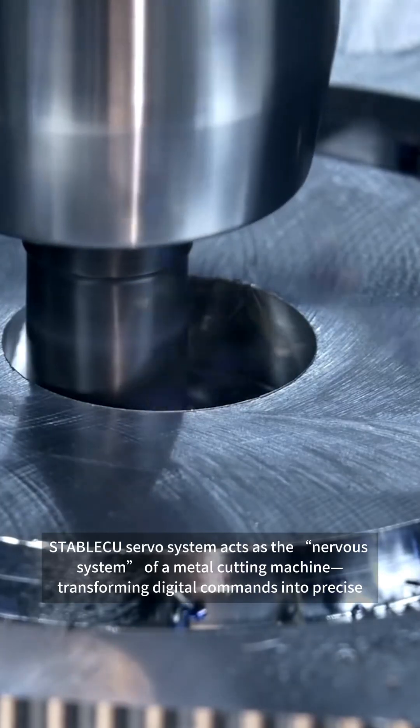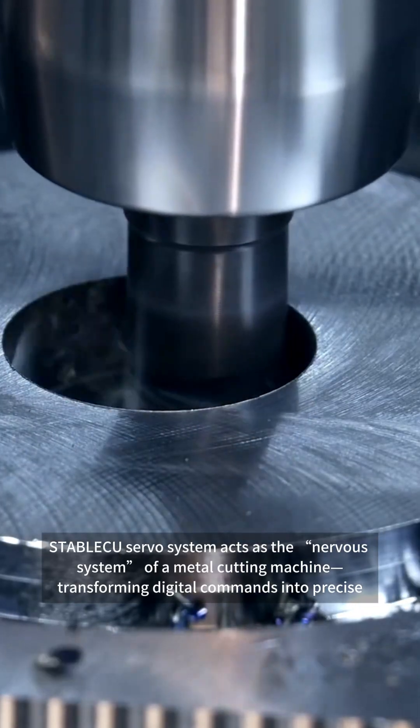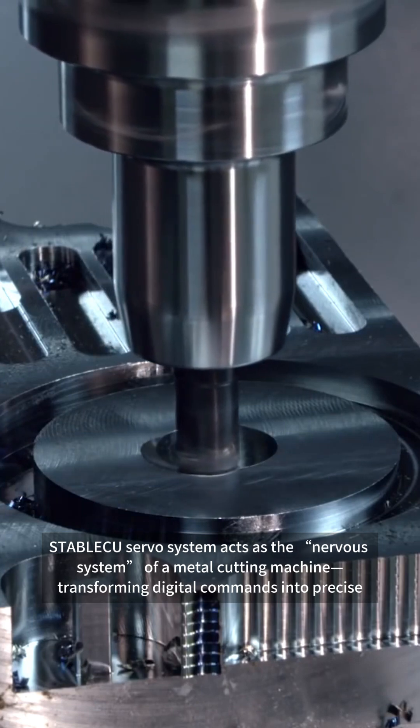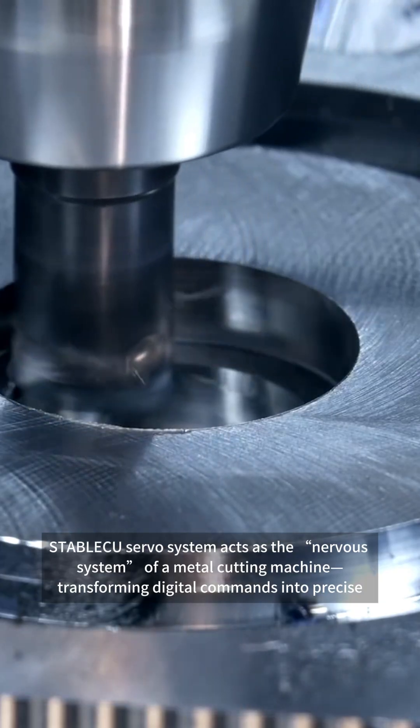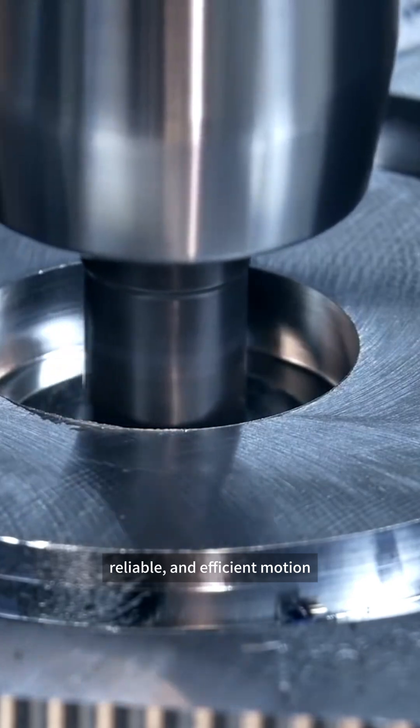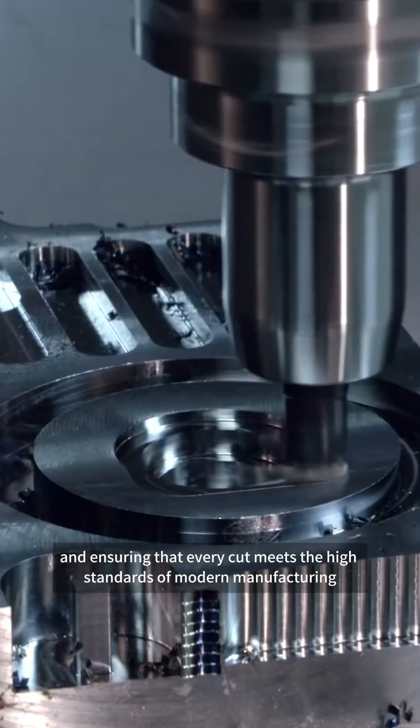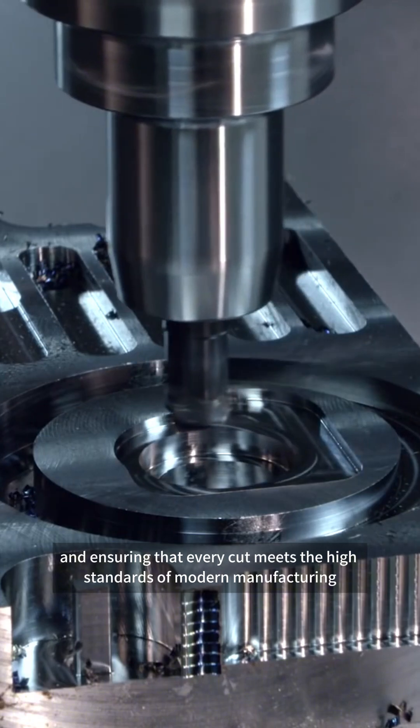In short, stable CU servo system acts as the nervous system of a metal cutting machine, transforming digital commands into precise, reliable, and efficient motion, and ensuring that every cut meets the high standards of modern manufacturing.